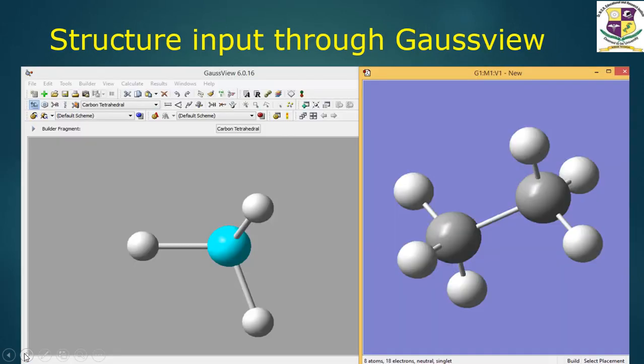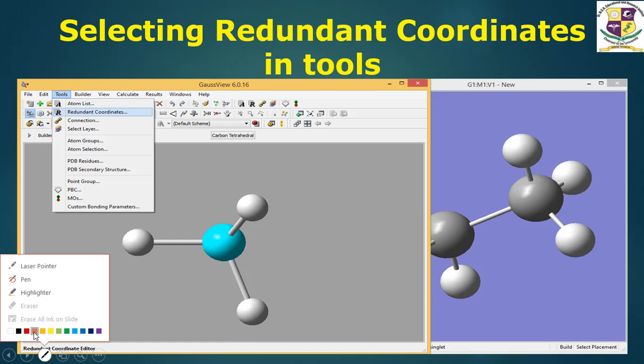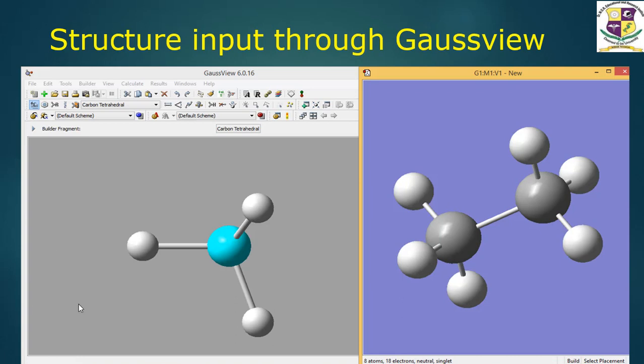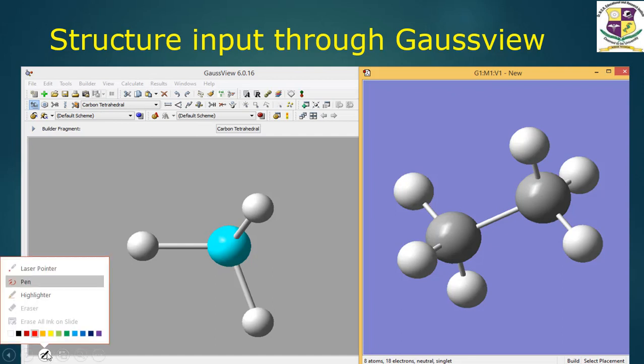Now we will see how this ethane molecule is given as input to the program. The structure of ethane molecule is given as input through Gauss view. This can be done by clicking the carbon tetrahedral, selecting carbon tetrahedral, and adding one more to the already existing one. You will get an ethane molecule like this. So this is given as input.